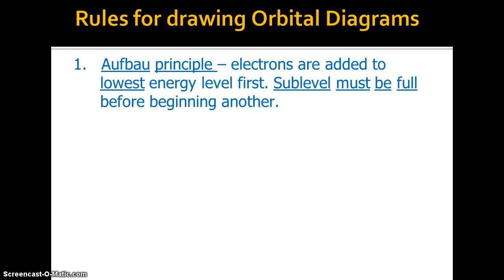The first rule, the Aufbau principle. That just means electrons are added to the lowest energy level first and each sublevel must be full before beginning another.